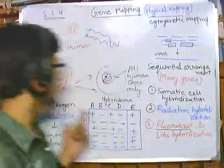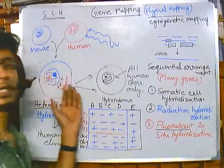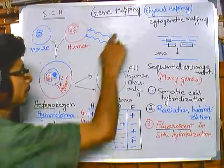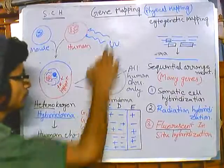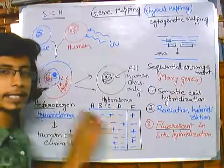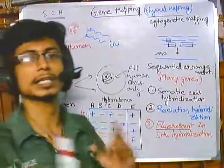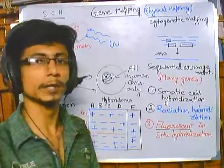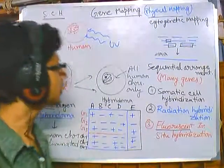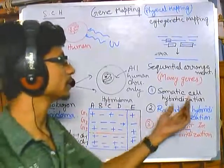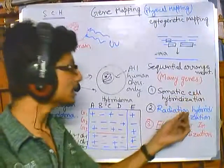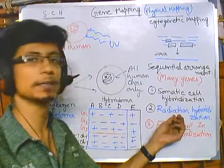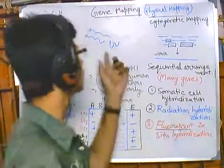If we produce many different cell lines from this heterokaryon and compare the features, we can get results telling us whether two genes are related, or where the genes are placed. This is the simple difference between radiation hybridization and somatic cell hybridization: the elimination in radiation hybridization is brought about via UV radiation.